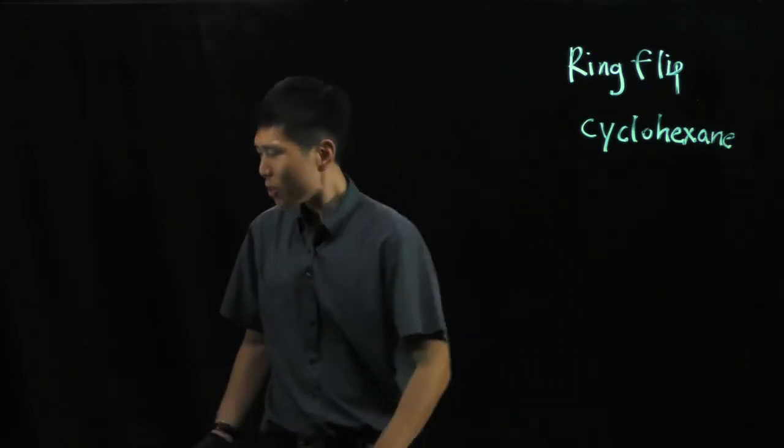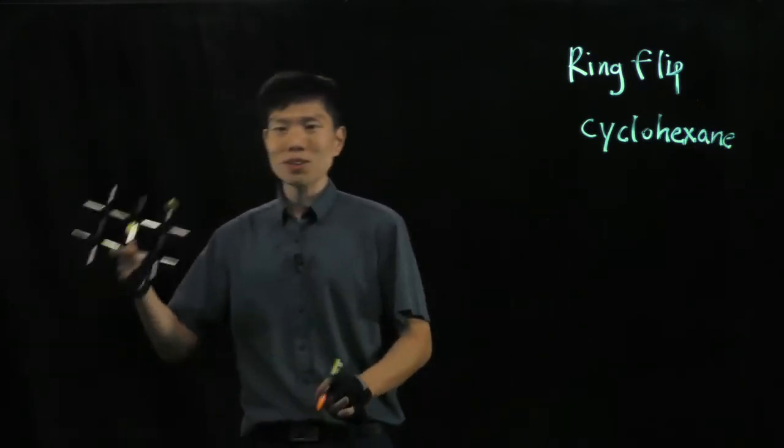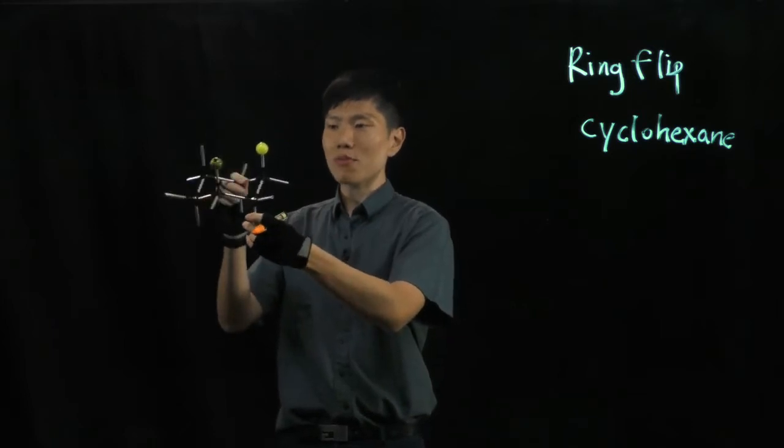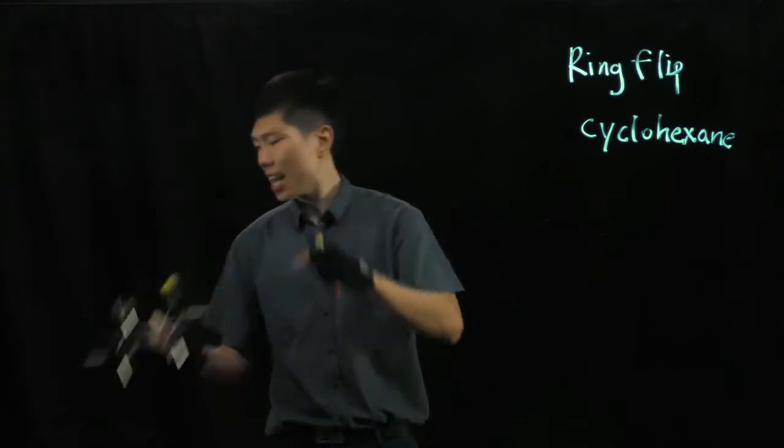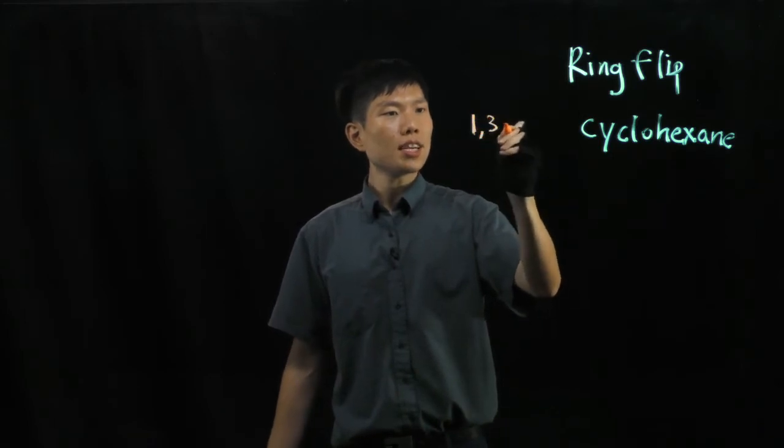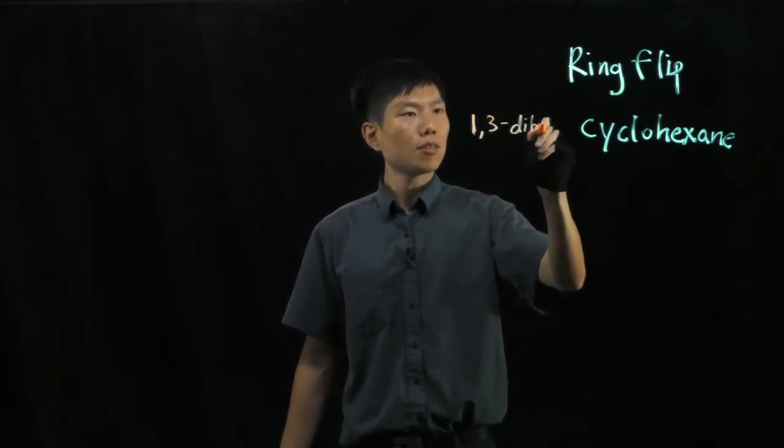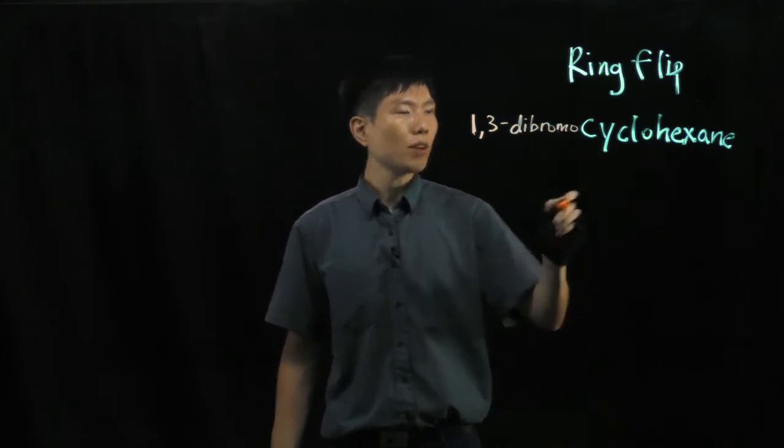Now let's make it more interesting. In this model, we have a cyclohexane ring with 2 substituents and they are 1,3-disubstituted. So let's make them both bromine - 1,3-dibromo-cyclohexane.